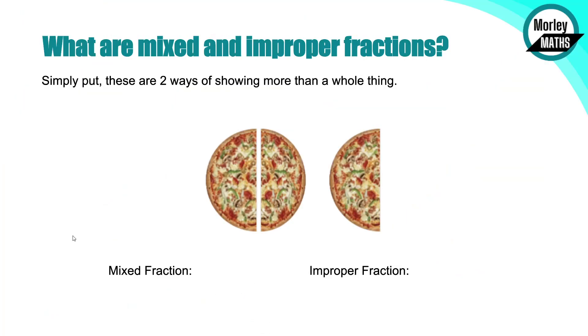So what are mixed and improper fractions? Simply put, these are two ways of showing that you've got more than a whole thing. Here we can clearly see we've got one and a half pieces. As a mixed fraction we just write that as one and a half. So it's a mixture of whole numbers and fractions.